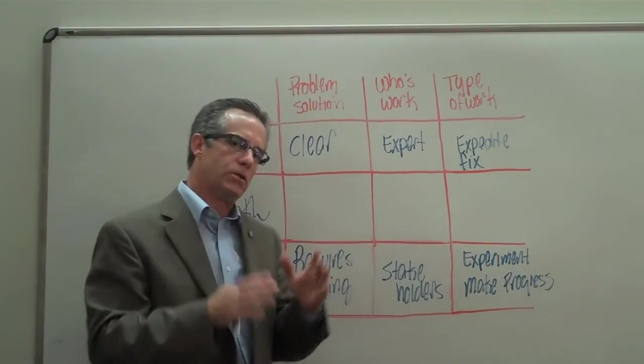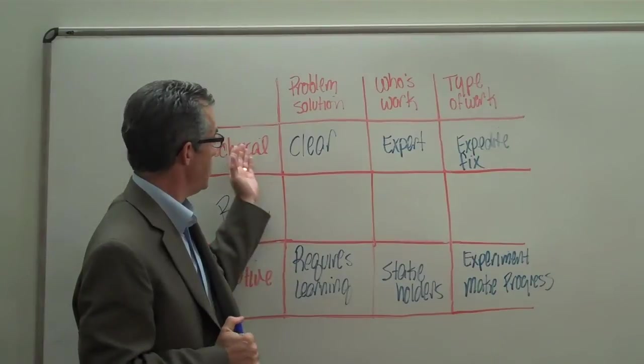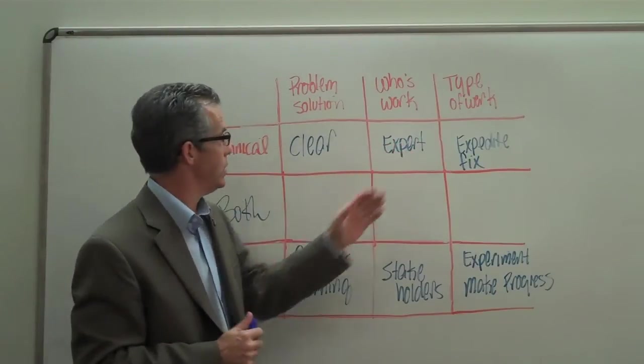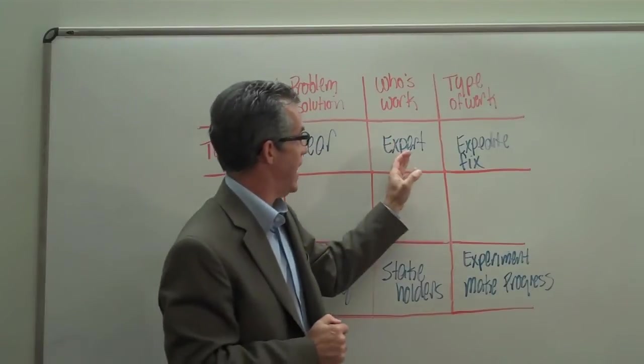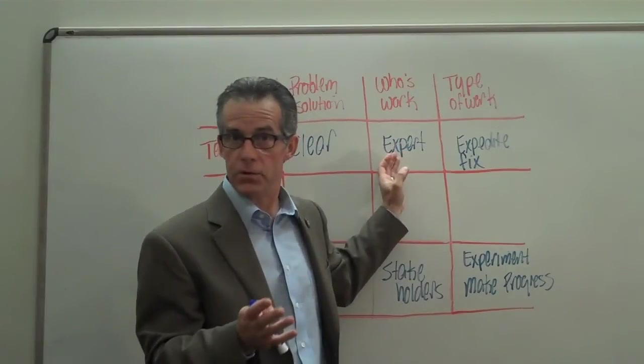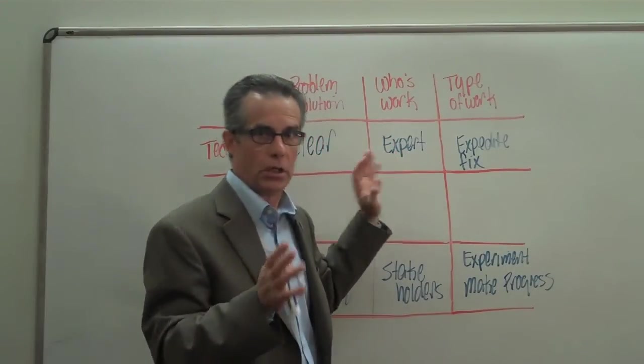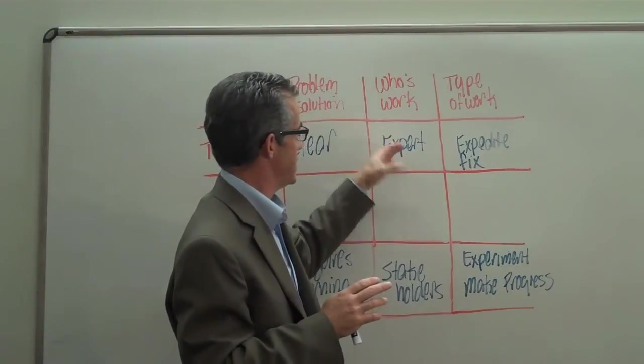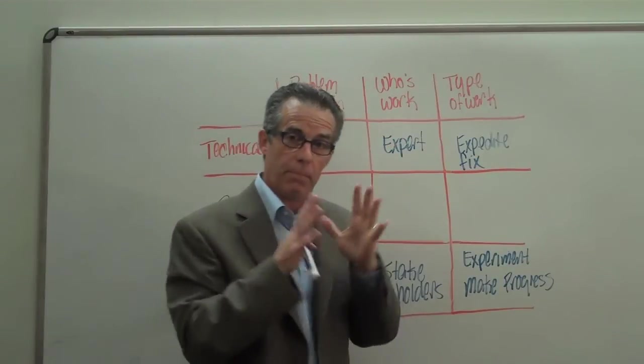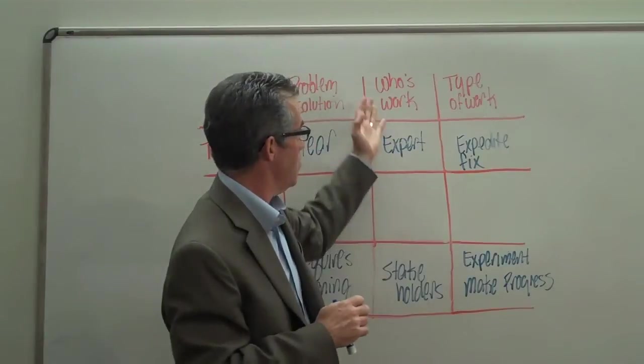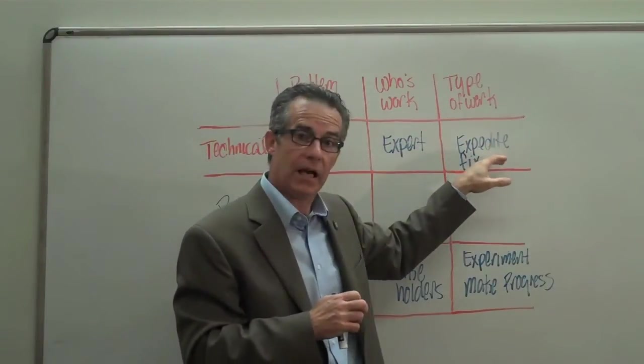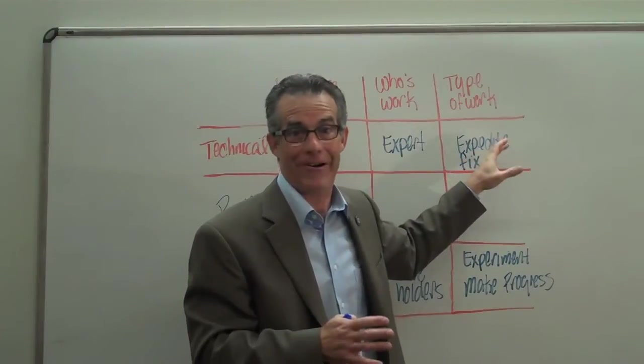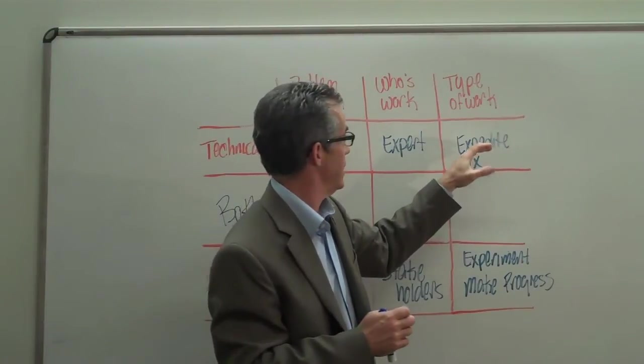If you're going to consolidate these two schools, there are probably some very clear technical things that you can do. Combining budgets, deciding which of the technologies those schools use work better or not as well. Maybe having an expert come in and combine the networks that are working, moving things to the facility that works best, and getting that done in time for the school year to start. Expediting that as quickly as possible.